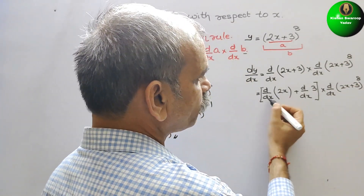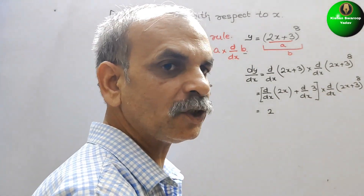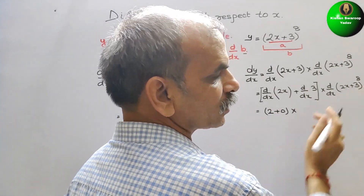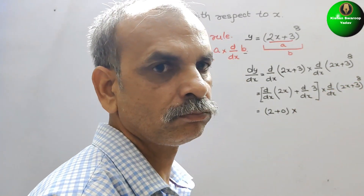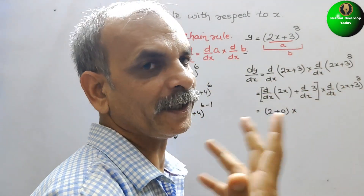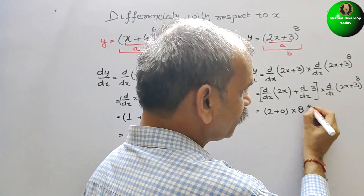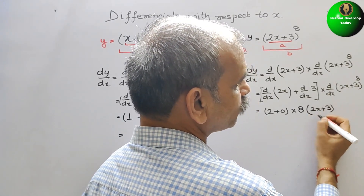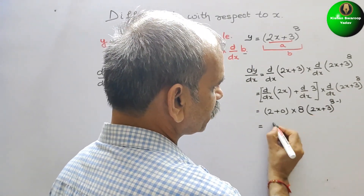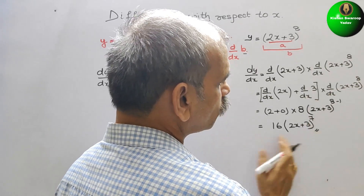Now if you differentiate this, we get d by dx of 2x plus d by dx of 3, all in one bracket, into d by dx of 2x plus 3 to the power of 8. Differentiating: d by dx of 2x gives 2, and this constant gives 0, so 2 plus 0. Now we take 2x plus 3 as z, so we differentiate z to the power of 8: n is 8, giving 8 into z to the power of 7, which is 2x plus 3 to the power of 7. So 2 into 8 is 16, and the final answer is 16 into 2x plus 3 to the power of 7.